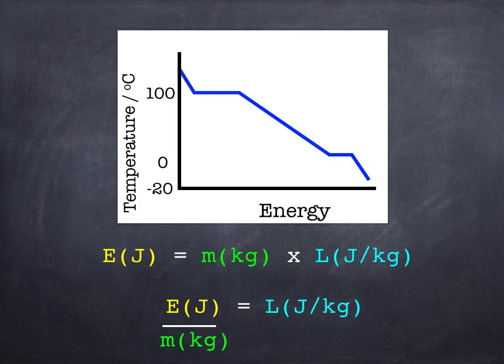Now to work out the specific latent heat for a material going through a change of state, then you can use the graph to do that. We need to measure how much energy has been transferred - either added if we're heating up and melting, or taken away if we're cooling down like in this graph here.